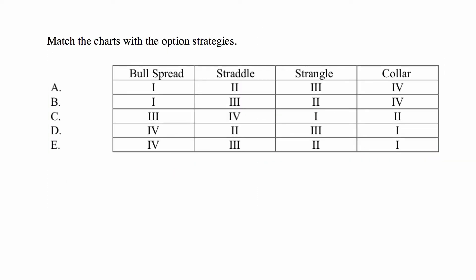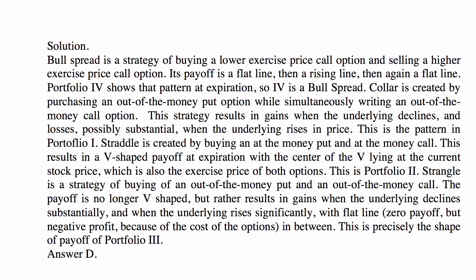Matching the charts to the strategies: a bull spread is created by buying a lower exercise price call option and selling a higher exercise price call option — long call and short call. The payoff is a flat line, then a rising line, then flat again. Portfolio 4 shows that pattern, so Portfolio 4 is a bull spread.